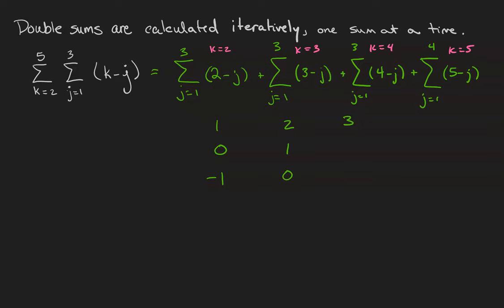4 minus 1 is 3. 4 minus 2 is 2. 4 minus 3 is 1. 5 minus 1 is 4. 5 minus 2 is 3. And 5 minus 3 is 2. Add all these together. We get 1 plus 1 plus 1 is 3. 2 plus 2 plus 2 is 6. Plus 3 is 9. 3 plus 3 is another 6. Makes 15. Plus 4 is 19. Minus 1 is 18.